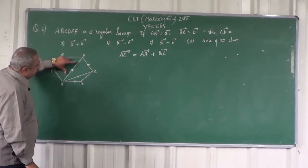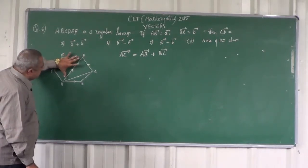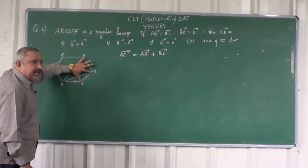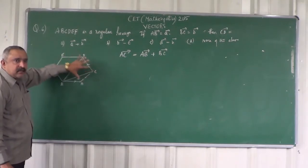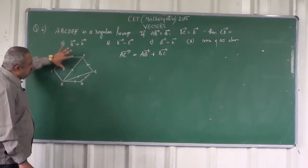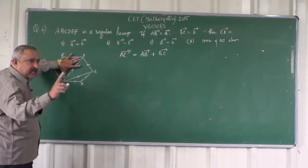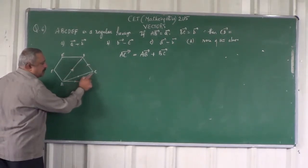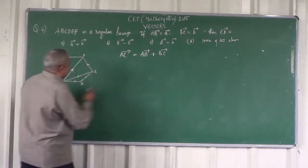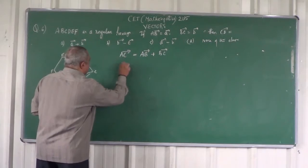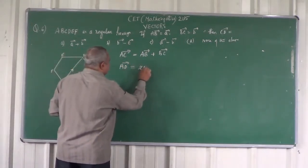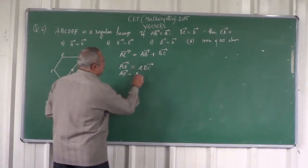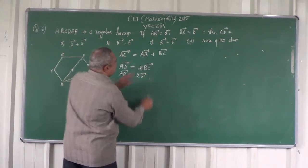Further, can you make out that in a regular hexagon, the magnitude of AD is twice the magnitude of BC? By geometry, in a regular hexagon, the length of AD is 2 times the length of BC. So vector AD equals 2 times vector BC, which equals 2 times vector B, since BC is given as vector B.